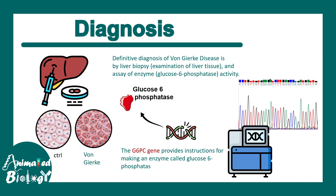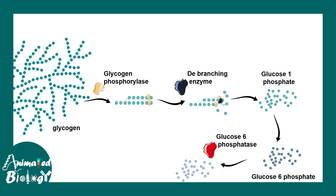In Von Gierke's disease, one of the prominent features is too much accumulation of glycogen in the liver cells, and that can be observed from a liver biopsy. To understand the overall mechanism of disease progression, we need to understand the glycogen breakdown pathway. There are a series of enzymes triggering the breakdown of branched glycogen into simple glucose, and each of these enzymes can be faulty and lead to several glycogen storage disorders, one such being Von Gierke's disease.